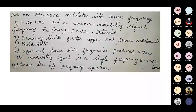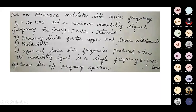Take this problem. Here it is mentioned AM DSB FC — it means amplitude modulated, double sideband, full carrier — which is our full AM signal. We have two sidebands along with the carrier. The carrier frequency Fc is 100 kilohertz, and maximum modulating signal frequency FM max is 5 kilohertz. Determine the frequency limits for the upper and the lower sideband and the bandwidth.